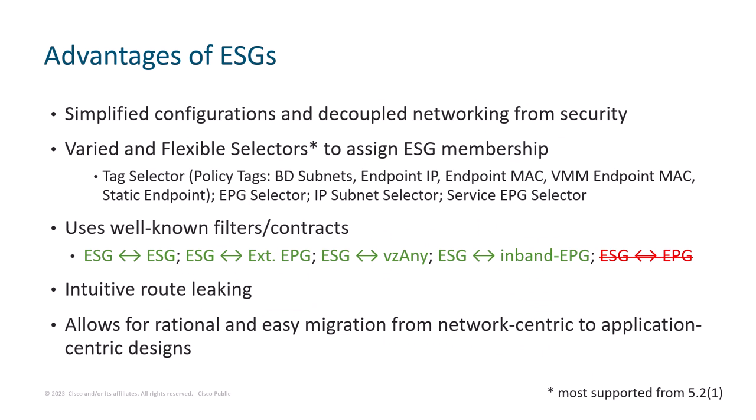There are additional advantages of ESGs other than decoupling networking from security and spanning multiple BDs. To assign endpoints to ESG, we may use various selectors. We can use tag selectors, which are used to classify ranges of IPs, specific IP, specific MAC addresses, VMM endpoints, or existing starting endpoints. We can also classify the entire EPG to an ESG using a concept of an EPG selector. The EPG selector and VMM endpoint MAC are the most commonly used, and that's why we will see them in action in the following demo.